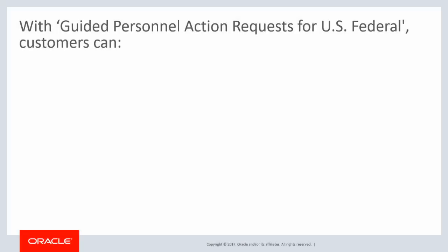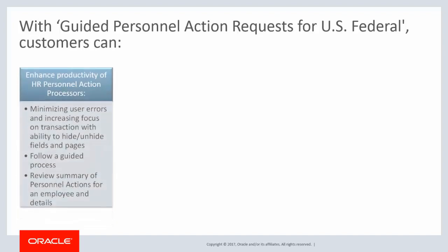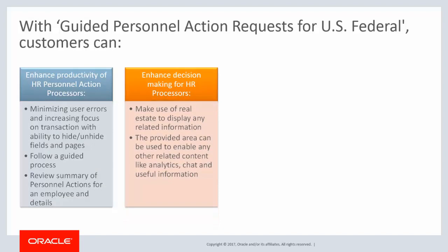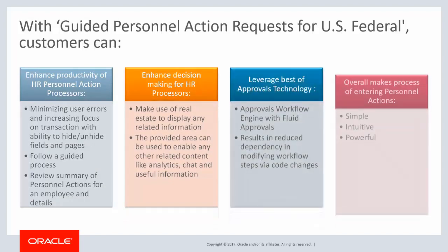The new Guided Personnel Action Request Fluid Interface provides a simple-to-use, intuitive application for Federal HR Administrators to quickly create and approve a Personnel Action Request, or PAR, using AWE fluid approvals. With the Guided Personnel Action Request process, U.S. Federal customers can enhance productivity of PAR processors, enhance decision-making for PAR processors, and leverage AWE.